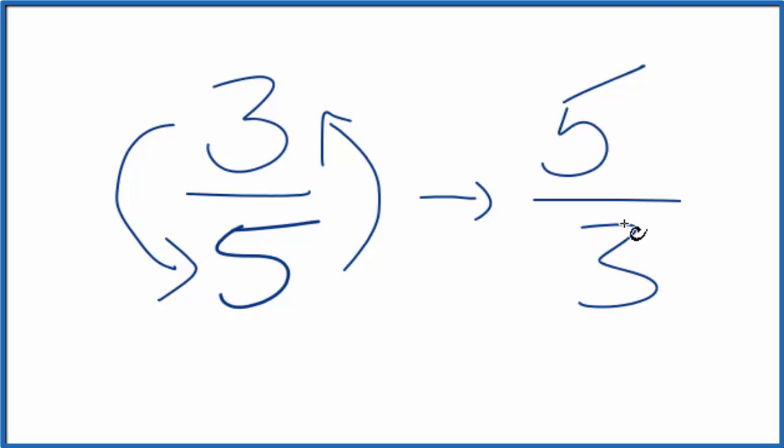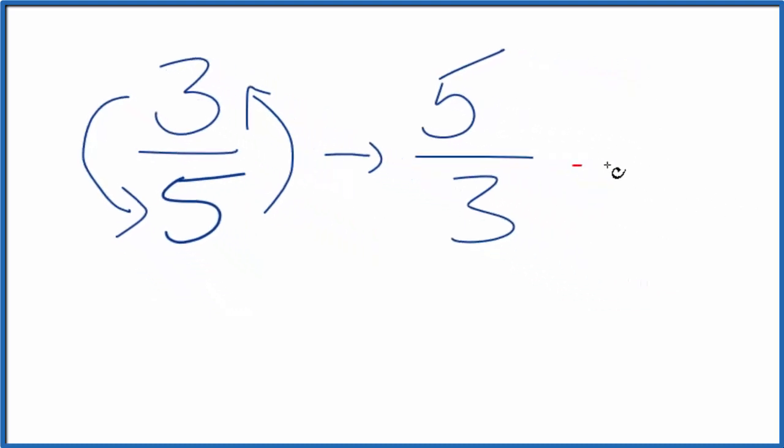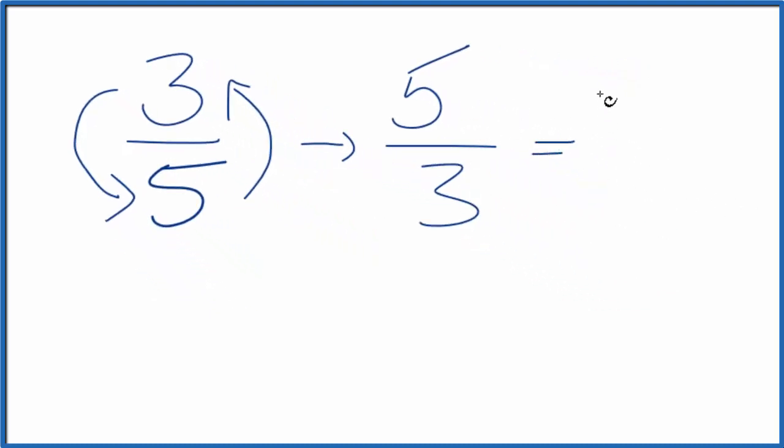This is an improper fraction, and we could change this to a mixed fraction. 3 goes into 5 one time with 2 left over, so you could call 5 thirds 1 and 2 thirds. Both of these numbers are equivalent, so they're reciprocals of 3 fifths.